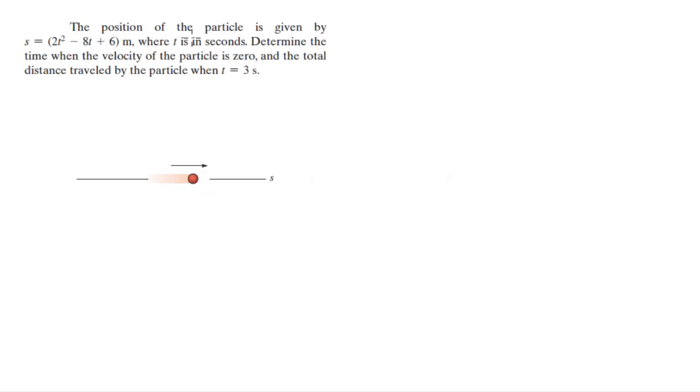Let's do this problem that says the position of the particle is given by S = 2t² - 8t + 6, where t is in seconds. Find the time when the velocity of the particle is 0 and the total distance traveled by the particle at t = 3 seconds.